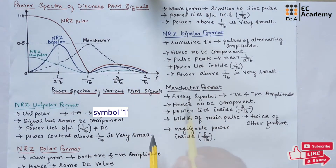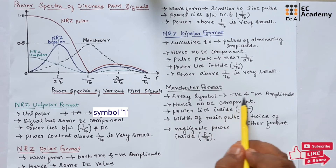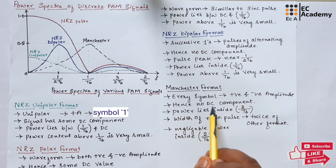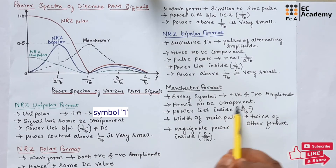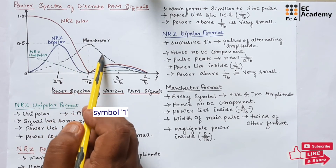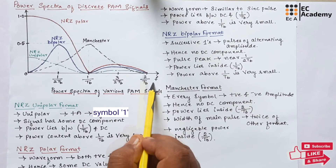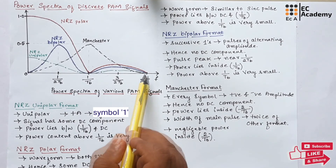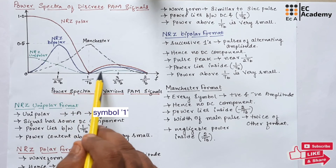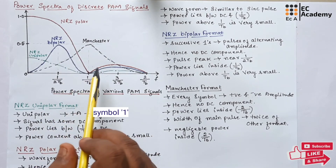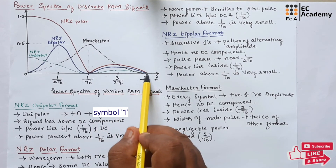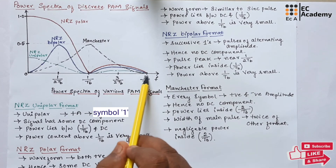Next, we will understand Manchester format. In Manchester format, every symbol is represented with positive and negative amplitude. Since we are having both positive and negative amplitude, there will be no DC component present in Manchester format. The Manchester format is represented in black color dotted line. The power for Manchester format lies between the bit rate 2/TB. If you observe this waveform, the width of Manchester format's main pulse is twice that of other formats. This Manchester format will have negligible power inside 2/TB.